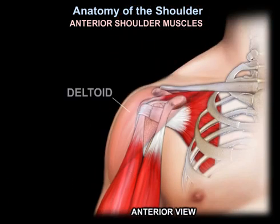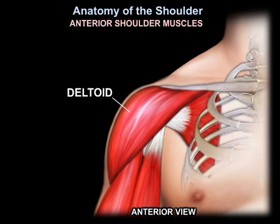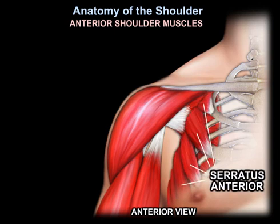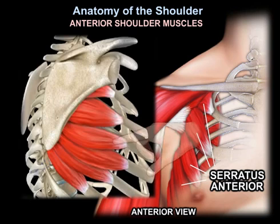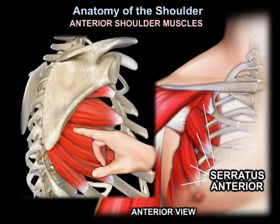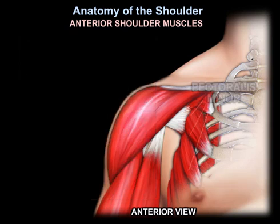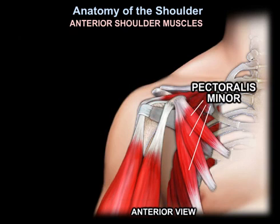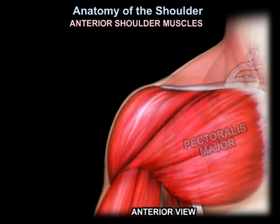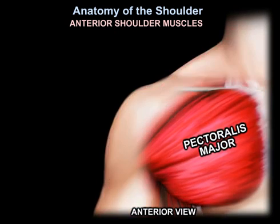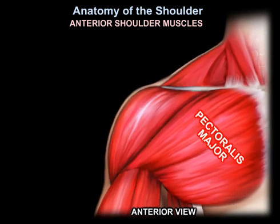In the anterior shoulder muscles, you can also see the deltoid muscle. You can see the serratus anterior and its direction. This is the pectoralis minor, and this is the pectoralis major muscle. There are two heads: the clavicular head and the sternocostal head for the pectoralis major muscle.